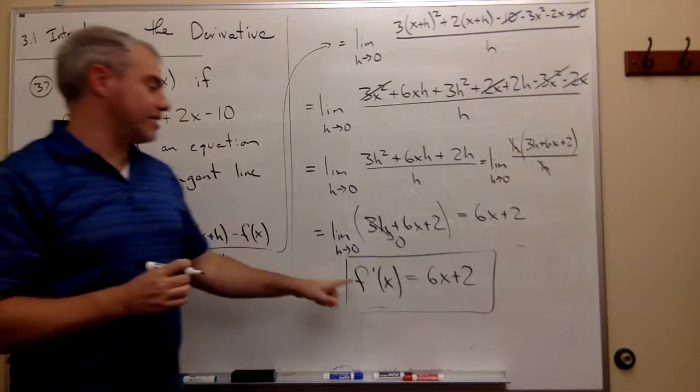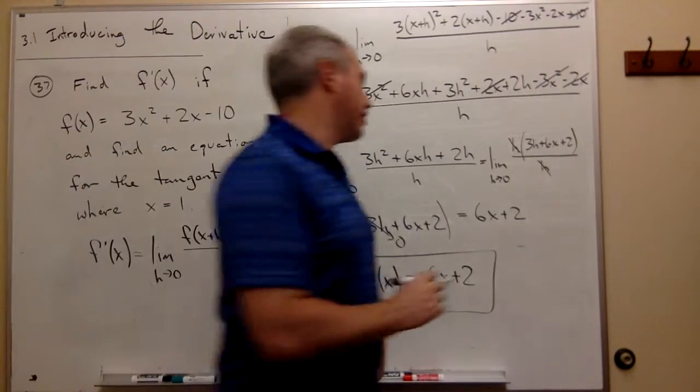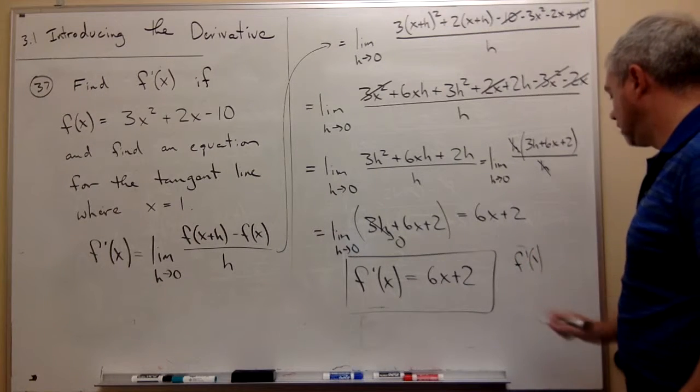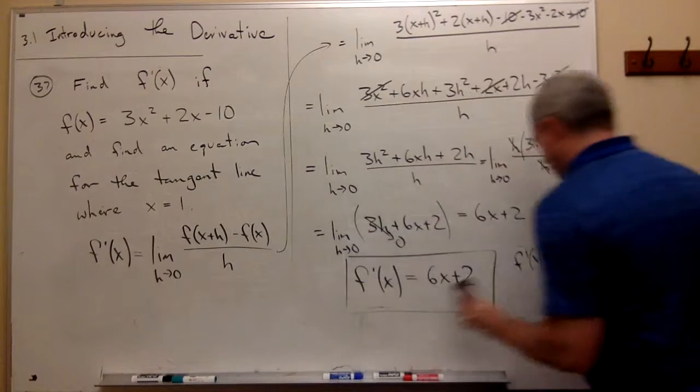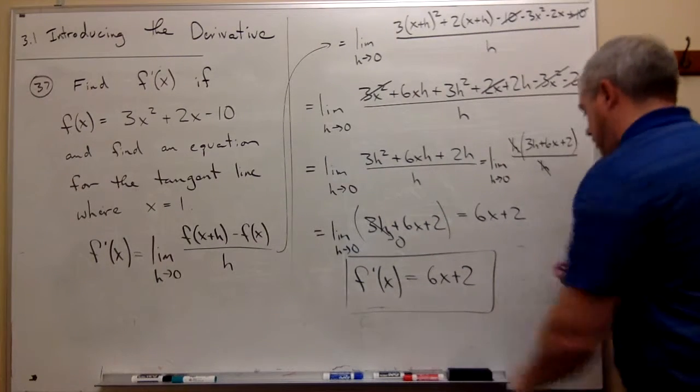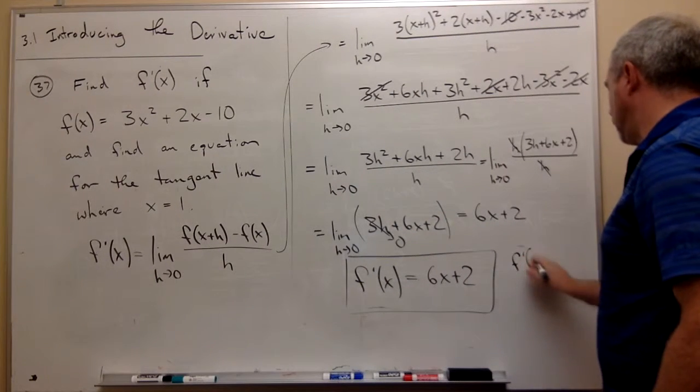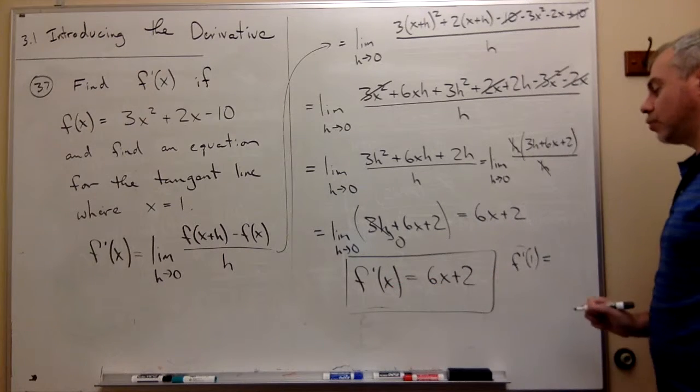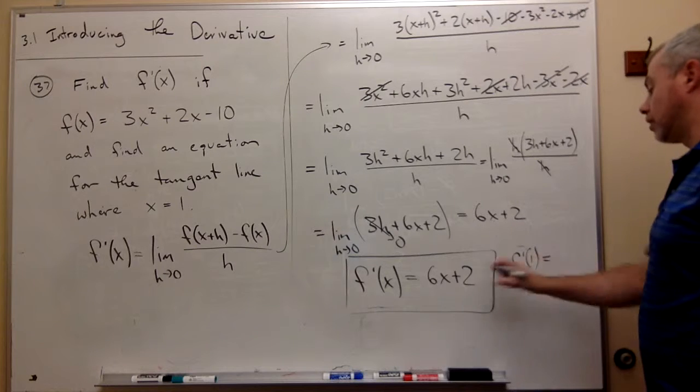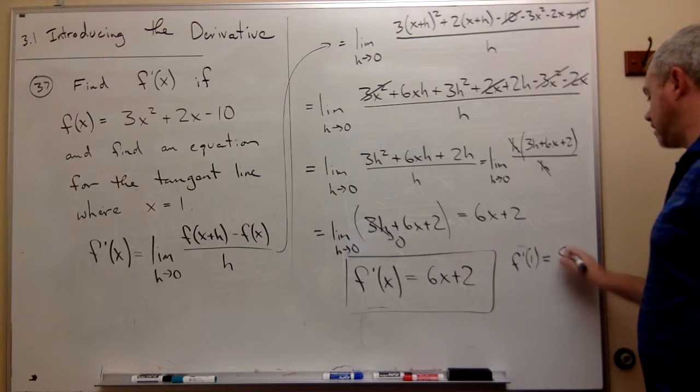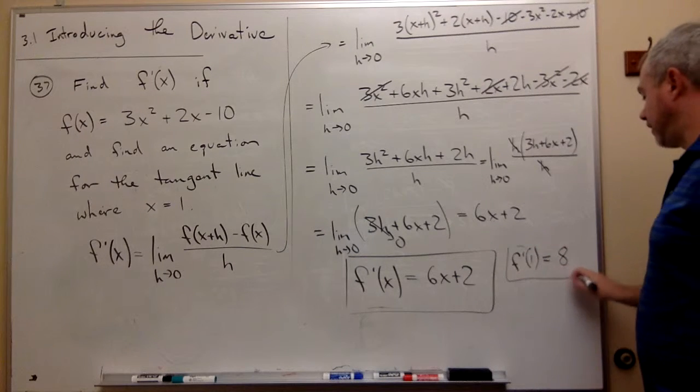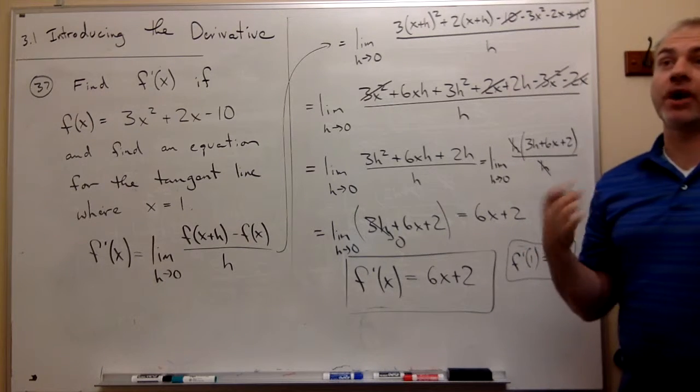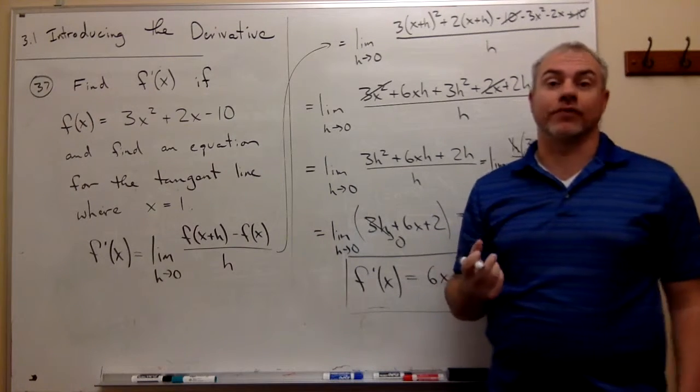If x = 1, what is the derivative or what is the slope? f'(1) is equal to, if I plug in 1 here I get 6(1) + 2, or 6 + 2 is 8. So the derivative at 1 is 8, so the slope of my tangent line is 8.